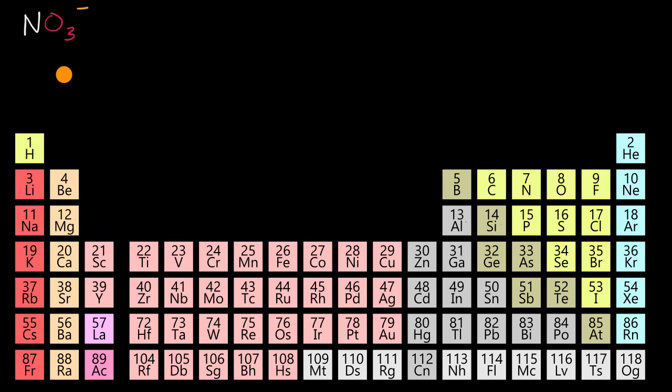The first step is to account for the valence electrons. Nitrogen has one, two, three, four, five valence electrons in its outer shell, in that second shell, if it's a neutral, free nitrogen atom. So we have five valence electrons there.